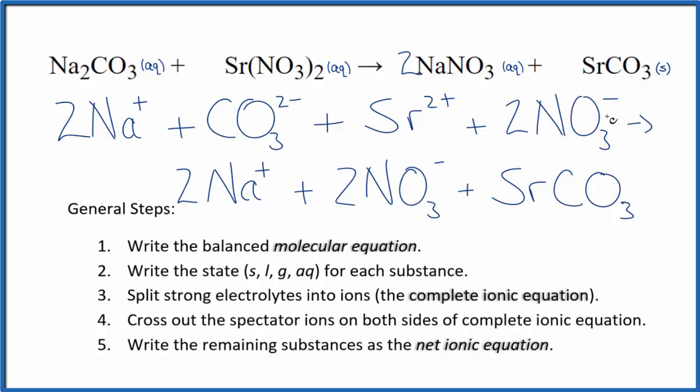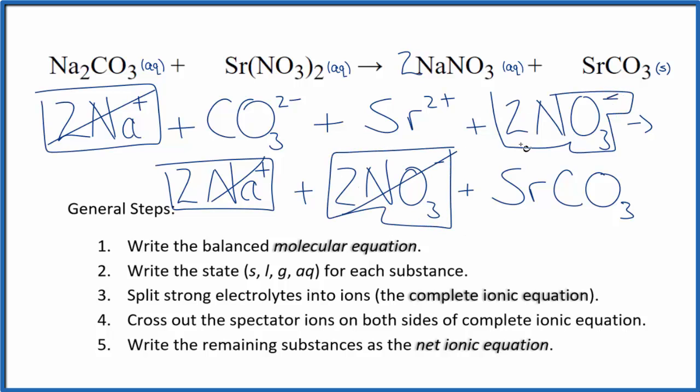So in the reactants here, I have two sodium ions. In the products, I have two sodium ions. These are spectator ions, cross them out. Two nitrate ions here in the reactants and again in the products. Spectator ions, we cross them out.